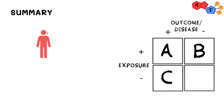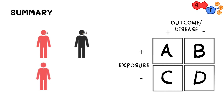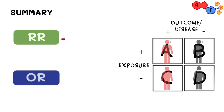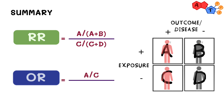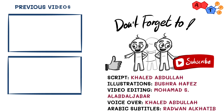To summarize: A represents smokers with lung cancer, B represents smokers without lung cancer, C represents non-smokers with lung cancer, and D represents non-smokers without lung cancer. Your relative risk is A over (A plus B) divided by C over (C plus D), while your odds ratio is simply (A over C) divided by (B over D). We hope you are two times as likely to understand relative risk and odds ratio. Don't forget to like and subscribe to receive our latest explanations.